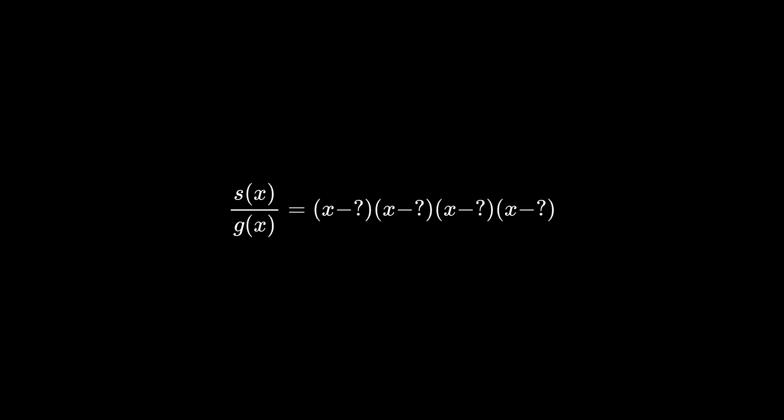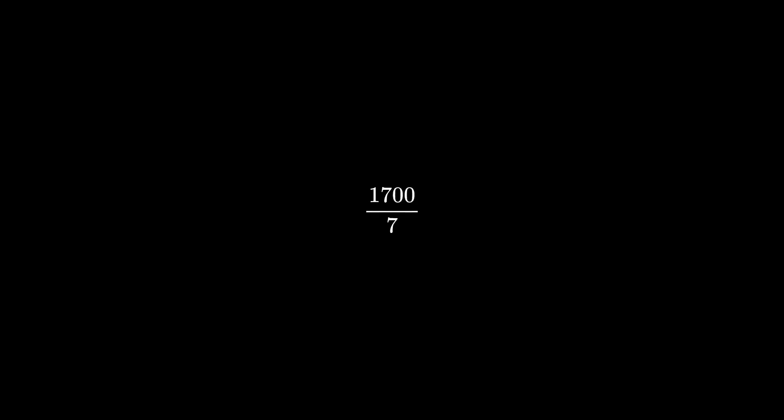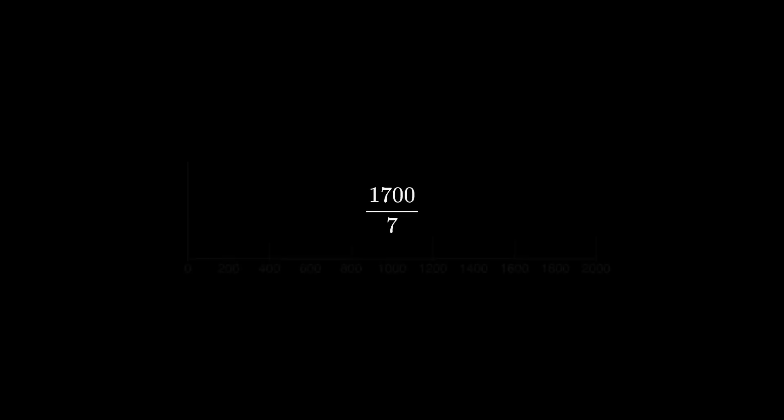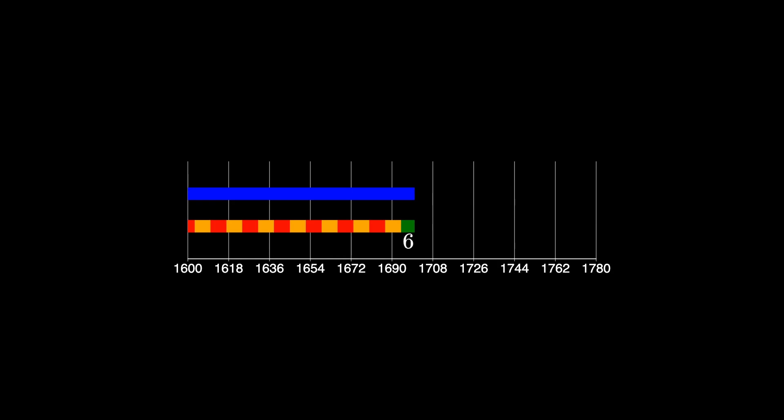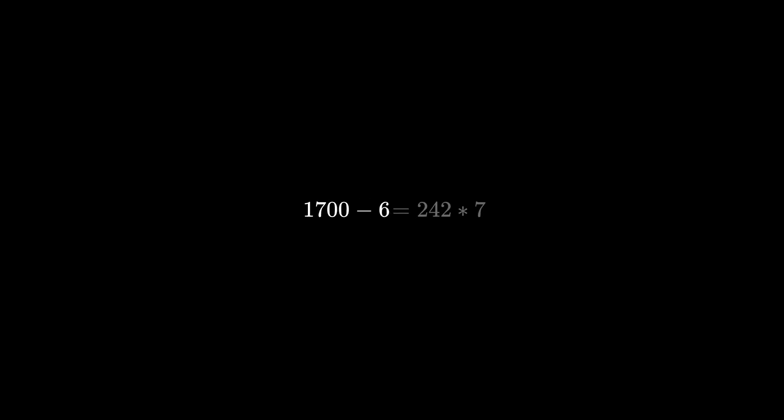Let's look at this problem with actual numbers we're more used to. Let's take a random number, 17 for example. What two digits do we have to add to this number in order to make it divisible by 7? We'll first add space for those digits, like we did with the polynomial, and in order to make it divisible by 7, we can find what's left when we try to fit as many 7s into 1700. That's just the remainder you get when you divide the two numbers. If you subtract that from 1700, it's divisible by 7.